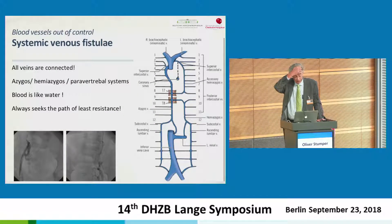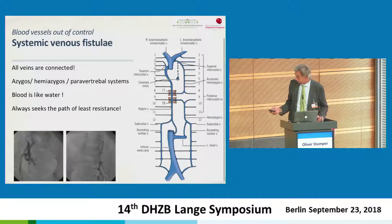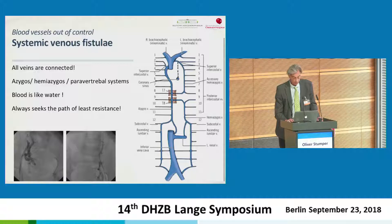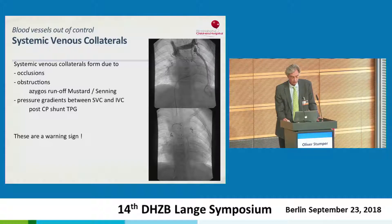Coming to systemic venous fistula — it's important to remind ourselves that all veins are connected. There is communication between the azygos, hemi-azygos, and paravertebral system to both the inferior and superior vena cava. The diaphragm is actually a watershed area. Blood always seeks the path of least resistance — if there is blockage, other vessels will form. In the univentricular or after bidirectional cavo-pulmonary shunt, the driving pressure between the SVC and left or right atrium is something like three to five mmHg, creating a huge tendency to open up systemic venous collaterals.